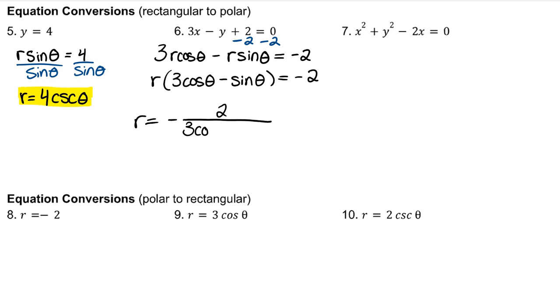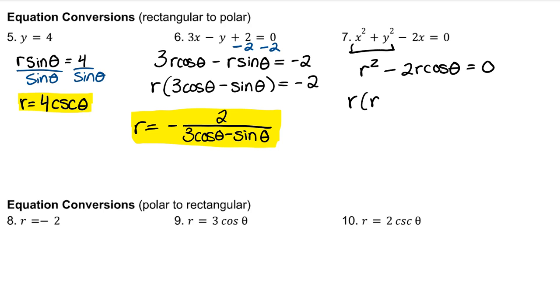For number 7, remember that x squared plus y squared is r squared. And then I'll replace this x with an r cosine theta. This could be factored to find two values for r. Using the zero product property, r could be 0, or r could be positive 2 cosine theta.